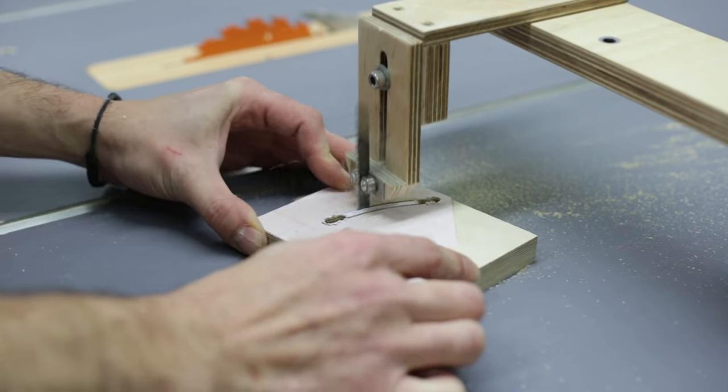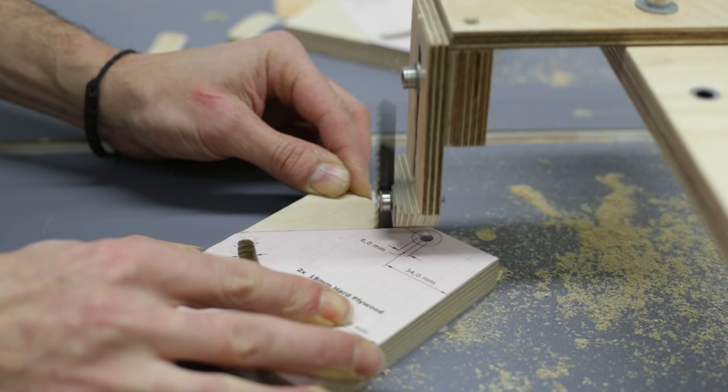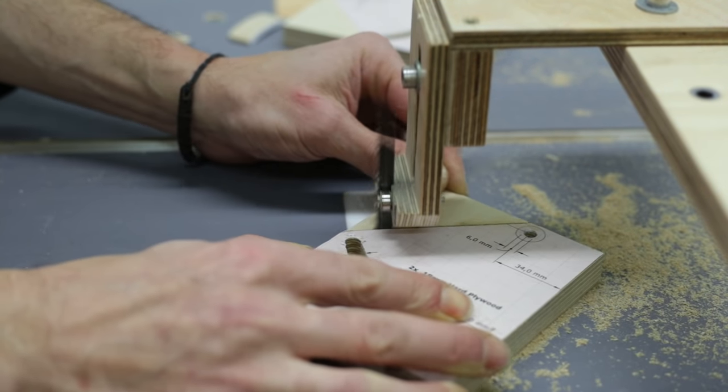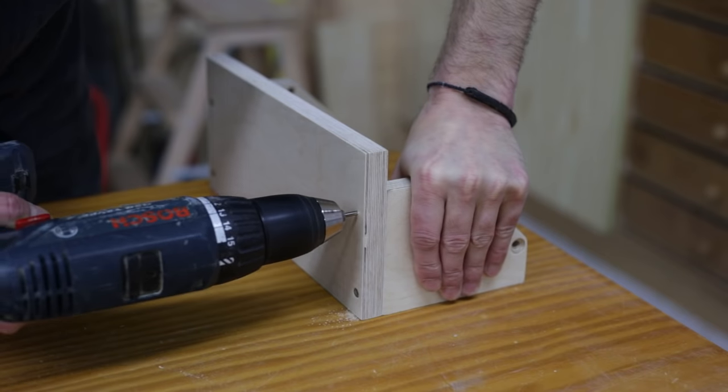Therefore, I'll use the same fastening system I used for the tailstock and tool rest, allowing me to easily remove the tilting table and disc.